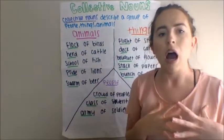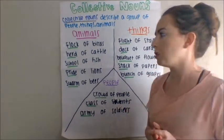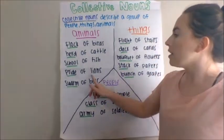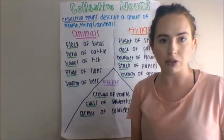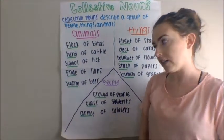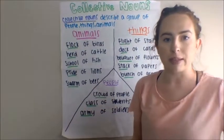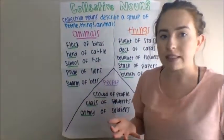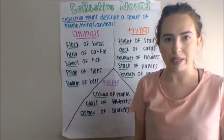If you wanted to talk about a group of fish, you would call it a school of fish. And if you wanted to say a group of lions, you'd call it a pride of lions. And then the last group of animals is a group of bees, and you'd call those a swarm of bees.